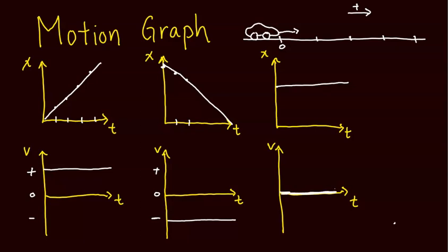When looking at these graphs, it's very helpful to think about how the position graph (on top) relates to the velocity graph (on bottom). Specifically, look at the slope: the slope of the position graph tells us about the velocity. A positive slope means positive velocity; a negative slope means negative velocity; a slope of zero means zero velocity.